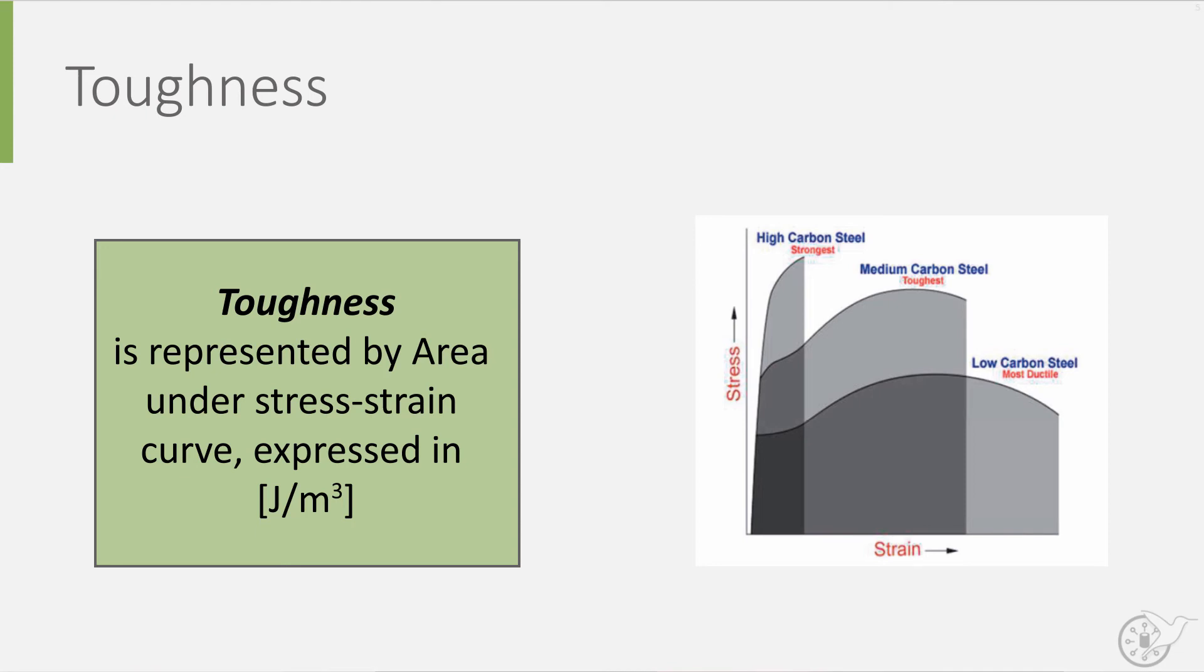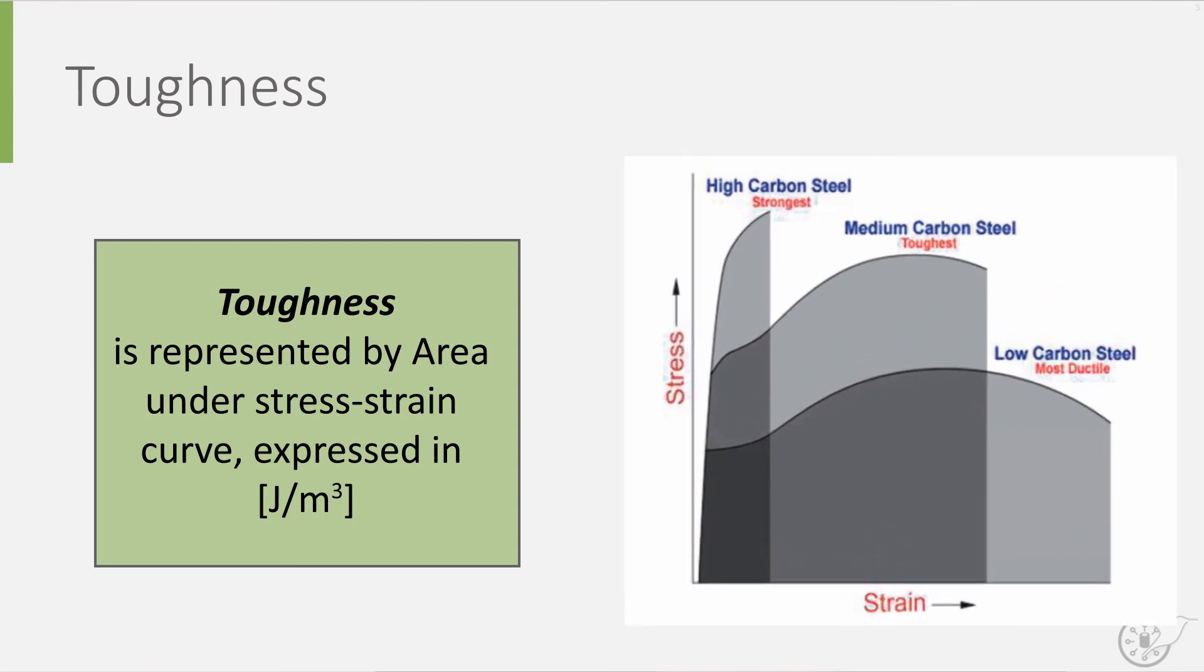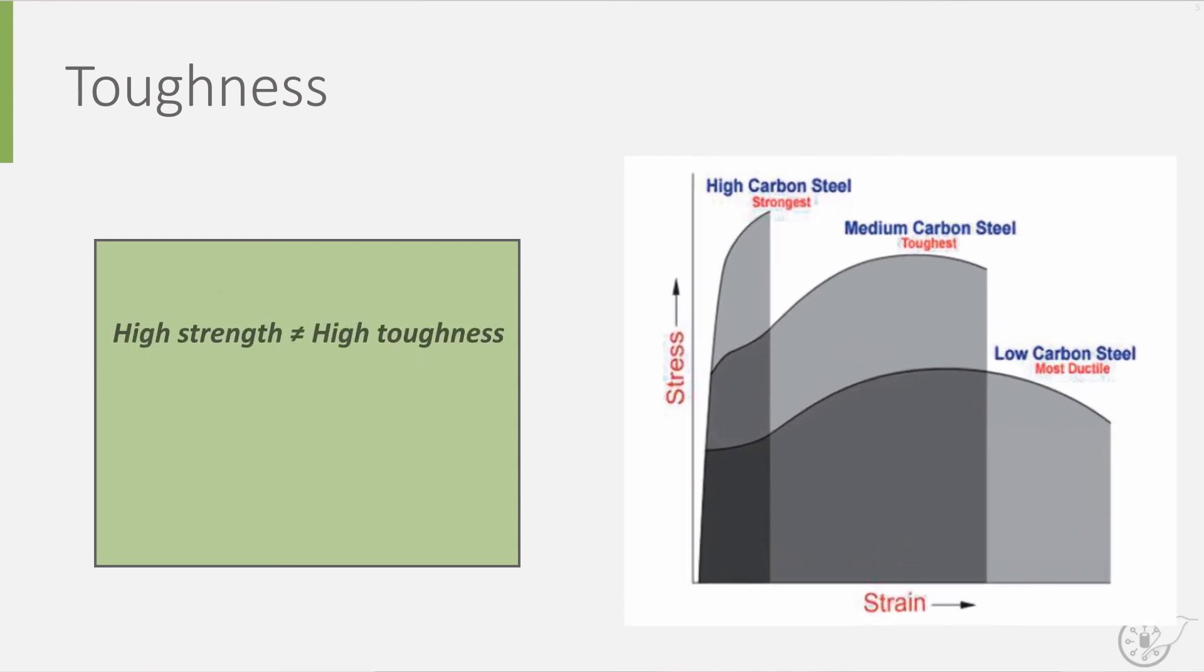If we look at the stress strain diagram for three types of carbon steel, we can observe that high strength does not necessarily equate to high toughness. Toughness is indeed a separate material property to consider when selecting a material for your design.